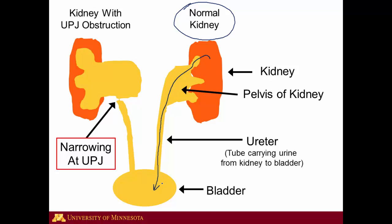The bladder holds the urine so that you can urinate periodically. When we talk about ureteropelvic junction obstruction, what we're focusing on is the area between the pelvis of the kidney and the ureter — and that area is right here.